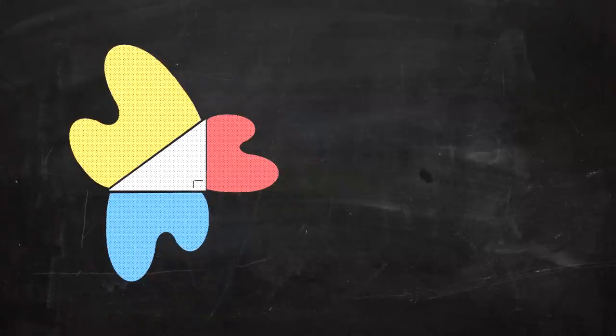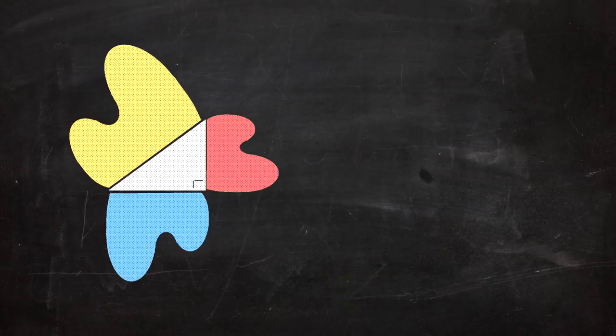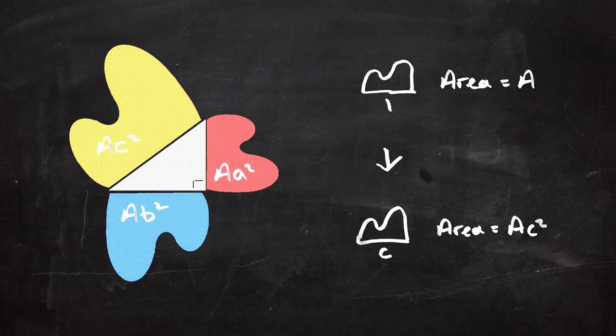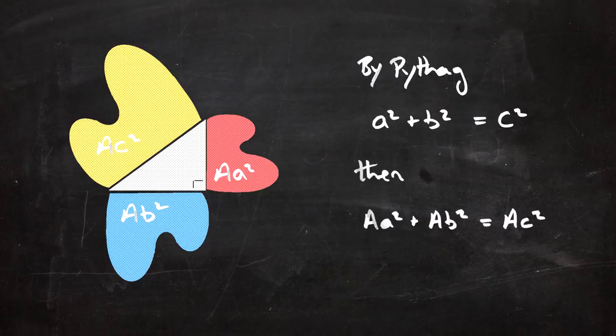Some of you may have noticed by now that this idea will work for any shape — even something like a wobble, where the wobbles are just scaled versions of themselves. Then the wobble on the hypotenuse is equal to the sum of the wobbles on the other two sides. That's because if we imagine a wobble of side length 1, it would have some area — let's call it A. If we scale that up by a factor of c, the area is scaled by a factor of c squared. So because Pythagoras' theorem is true, the areas will be equal for any shape.